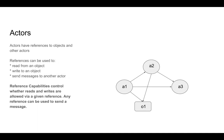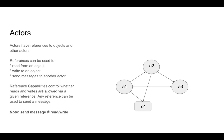Reference capabilities control whether reads and writes are allowed via a given reference. Any reference can be used to send a message — if you have a reference to an actor you can always send that actor a message. But reference capabilities control whether you can read or write to an object. Sending a message is not the same as reading or writing, so even if you can't read or write an object, if it's an actor you can still send it a message.